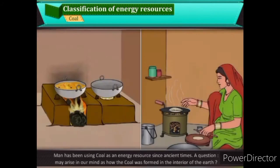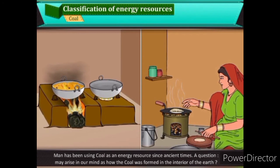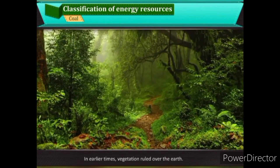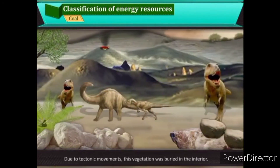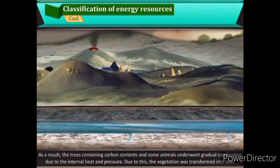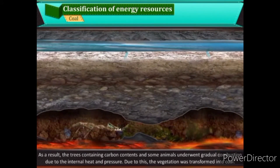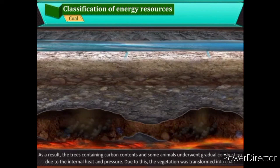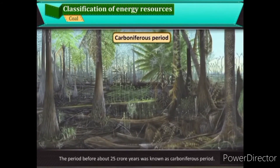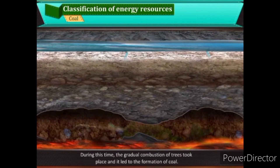Man has been using coal as an energy resource since ancient times. In earlier times, vegetation ruled the earth. Due to tectonic movements, this vegetation was buried in the interior; as a result, trees containing carbon and some animals underwent gradual combustion due to internal heat and pressure, transforming vegetation into coal. The period about 25 crore years ago was known as the Carboniferous period, during which the gradual combustion of trees led to coal formation.